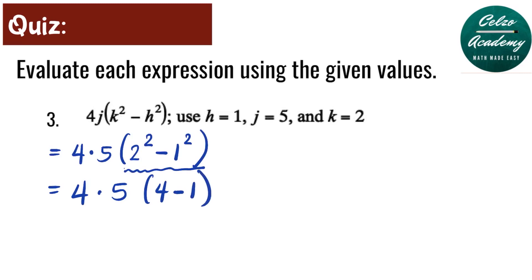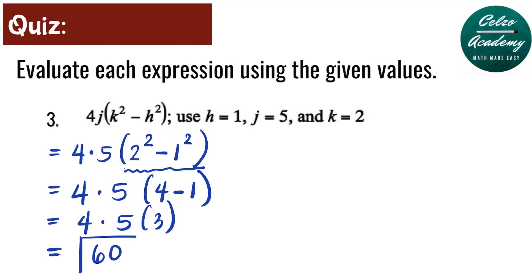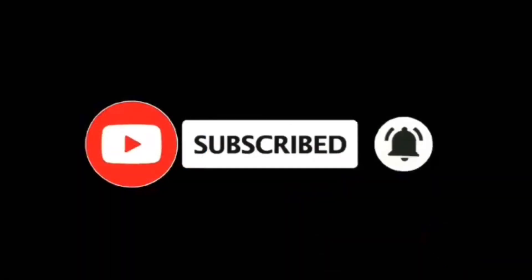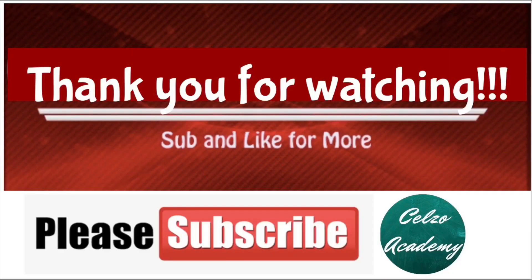So now this is the same as 4 times 5 times 3. Simplifying from left to right: 4 times 5 is 20, and 20 times 3 is 60. So the answer for this expression is 60. Thank you for watching, and please consider subscribing to my channel at Celso Academy.